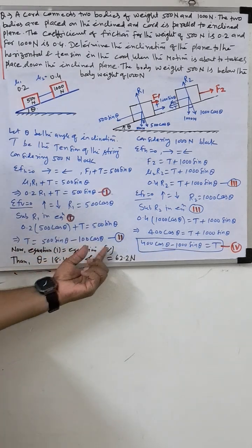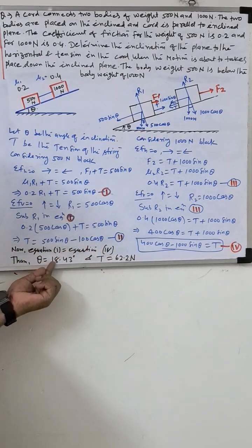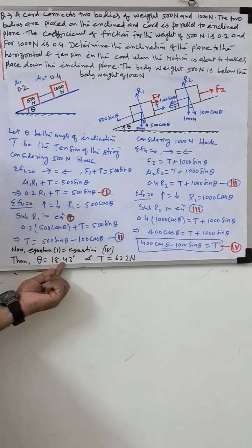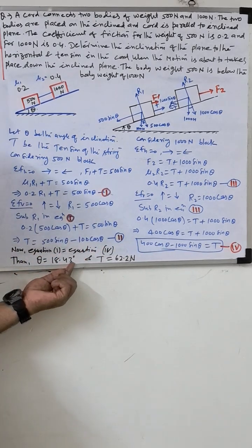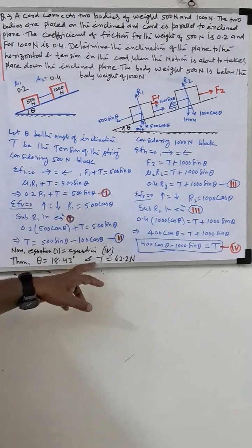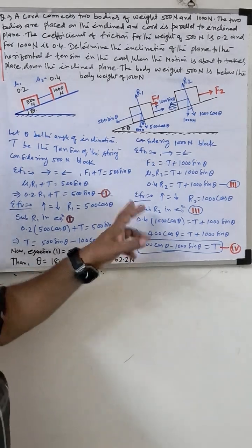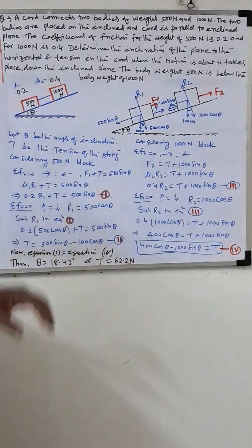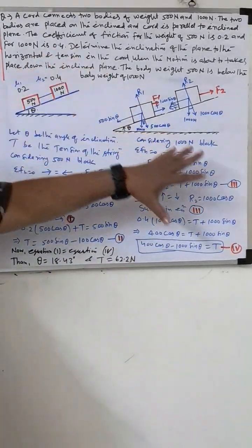Solving the combined equation, we get theta equal to 18.43 degrees.